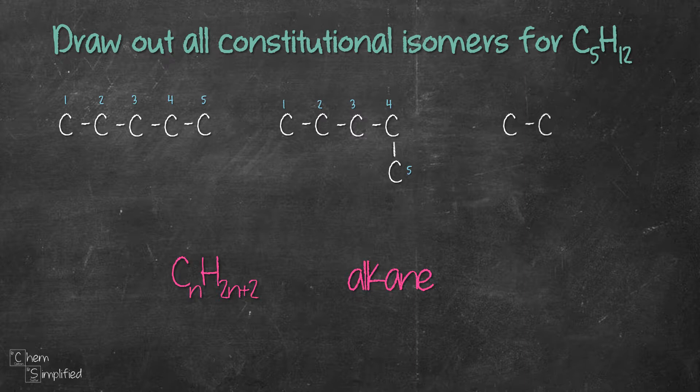Same goes to if we were to draw 4 carbons straight in a row and we stick a carbon at the front. It will be a 5 carbon chain because we can count 5 carbons continuously. So the lesson here is to not stick a substituent, the stuff hanging there, at the end of the chain.